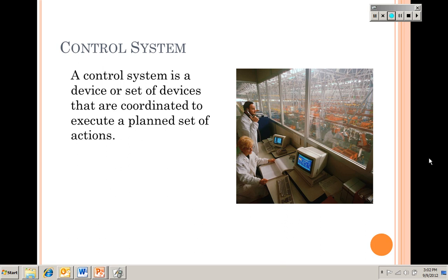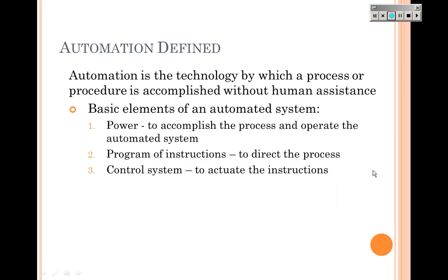Automation is the technology by which a process or procedure is accomplished without human assistance. Some things are fully automated and some things are partially automated. A fully automated system has no human intervention, while a partially automated system means that parts of the process use automation but also involve human interaction.